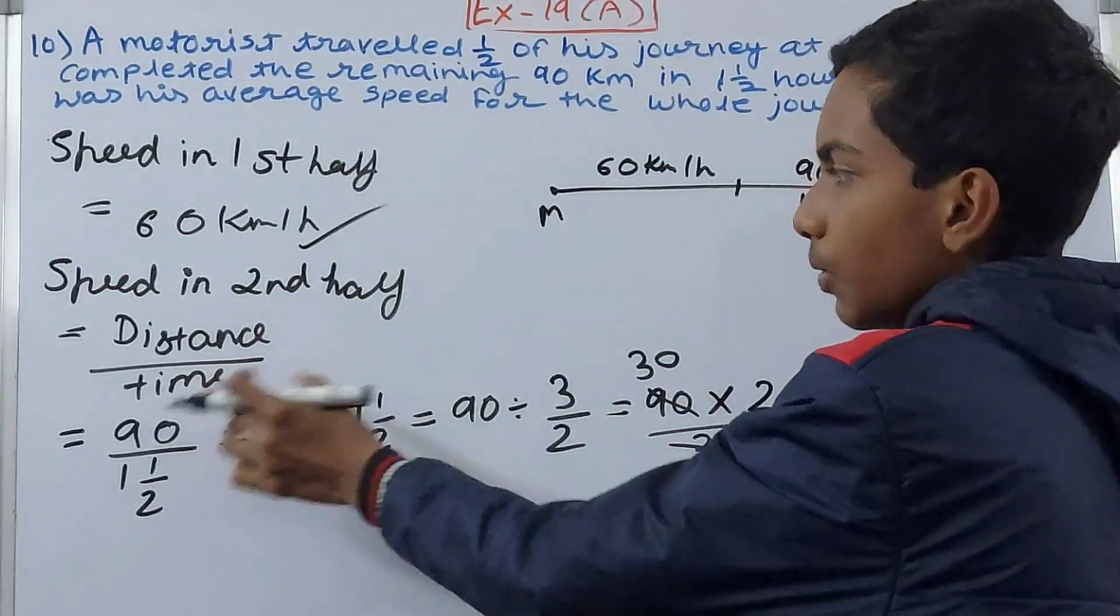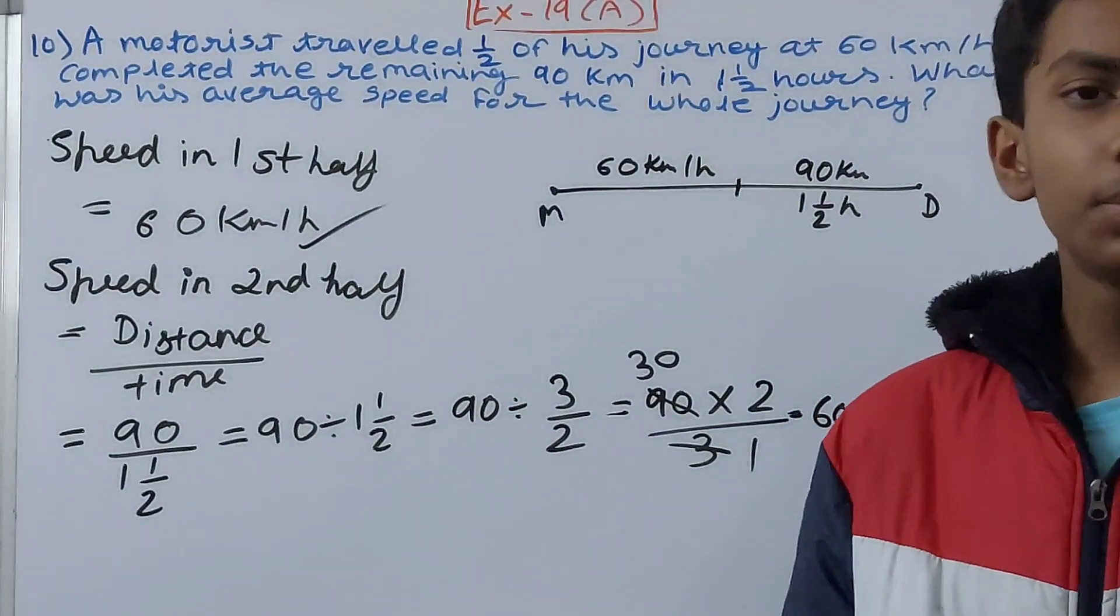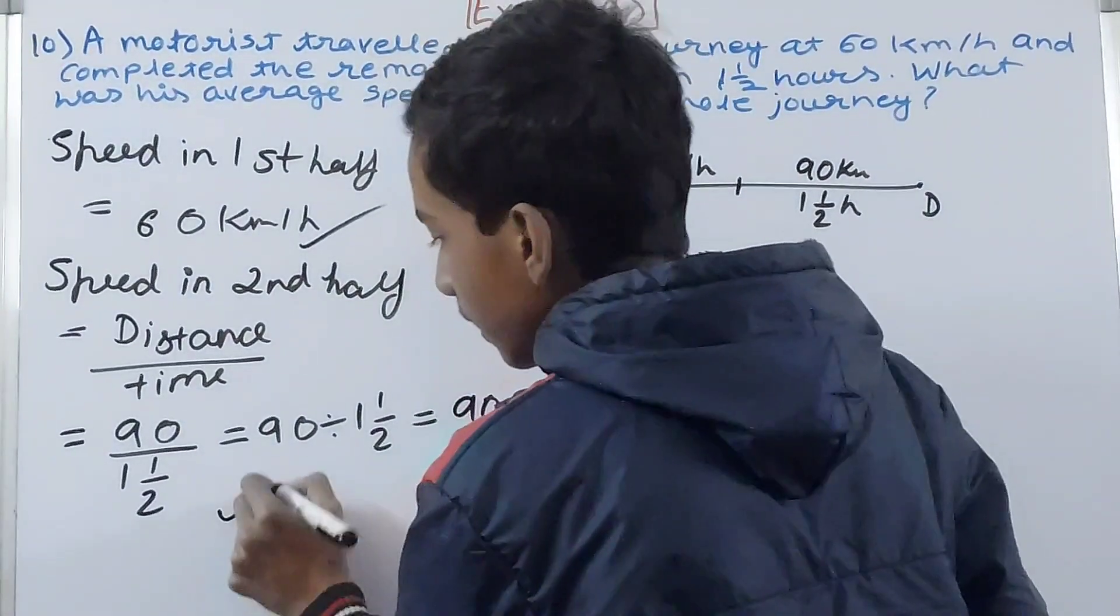There can be two ways to do it: First, you can add the entire distance upon the total time, or simply we can just add the two speeds and divide them by the number.